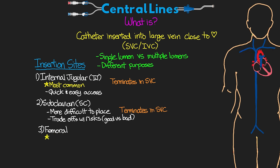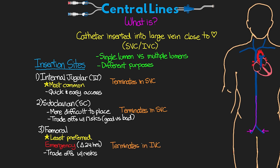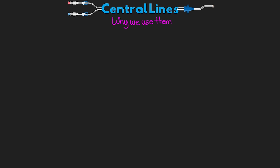The last site is the femoral, and this is our least preferred access site, but it's often the one that we place in an emergency. If we do place it emergently, it is something we want to try to get changed out within 24 hours if possible. There are trade-offs with risks with this catheter. It enters via the femoral vein and the tip of the catheter terminates in the IVC. We do use a longer catheter for our femoral lines.